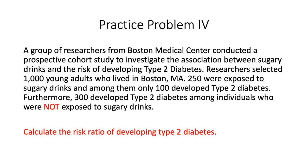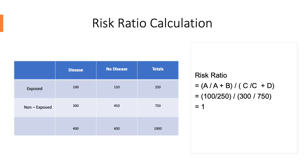For the last problem, we will calculate the risk ratio of developing type 2 diabetes. To calculate the risk ratio, we took the relative risk in the exposed group divided by the relative risk in the unexposed group, and we get 1. To interpret these results, there is little difference in risk of developing type 2 diabetes among individuals who are exposed to sugary drinks when compared to individuals who are not exposed to sugary drinks.